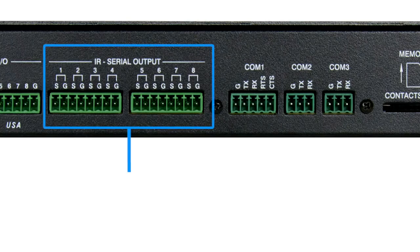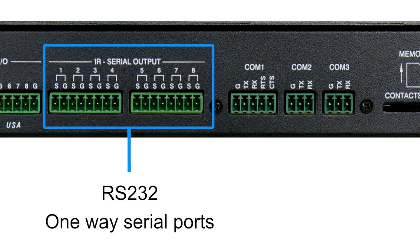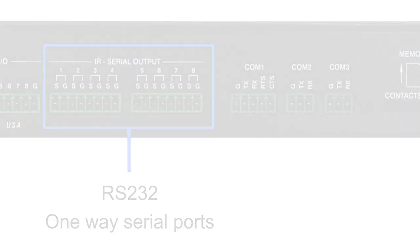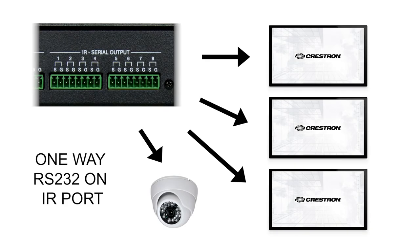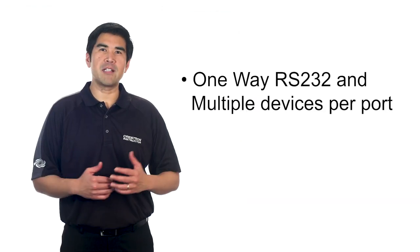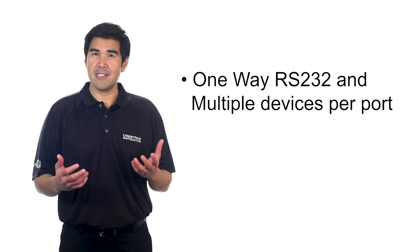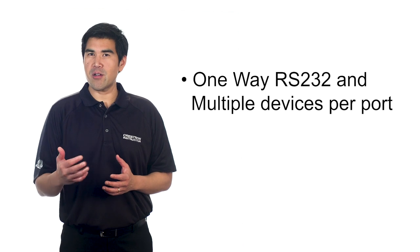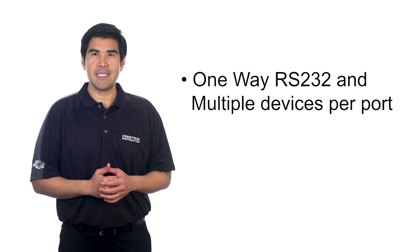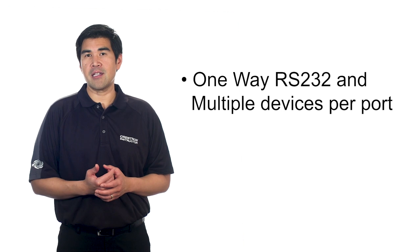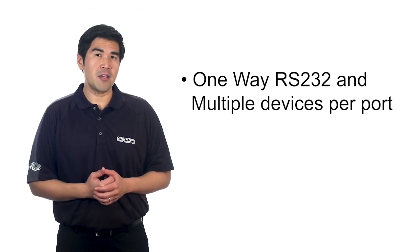It's also possible for the programmer to configure any infrared port to act instead as a one-way serial port. For example, the CP3 has three serial ports, but if the system has four serial devices and only one of those four needs to be sent a command without returning any information, we can take advantage of a spare IR port instead. This feature, combined with the ability to put multiple infrared devices on a single port, allows the CP3 to be used even when there are more devices than ports, potentially saving the cost of a processor like the AV3 or Pro3.